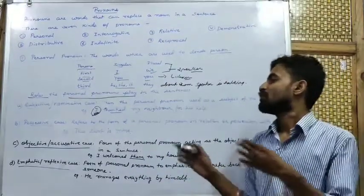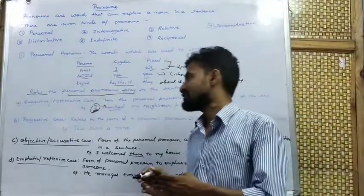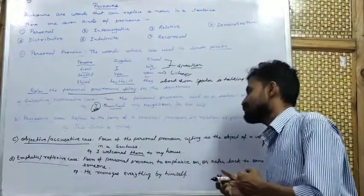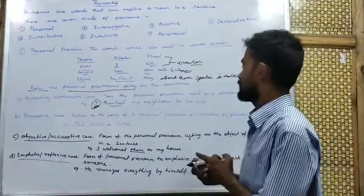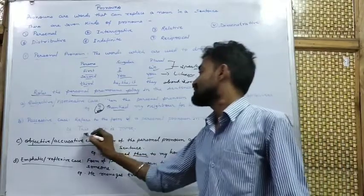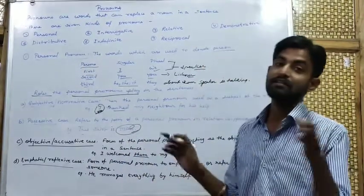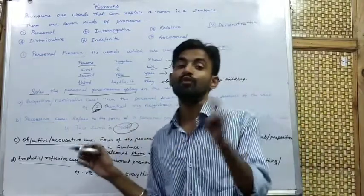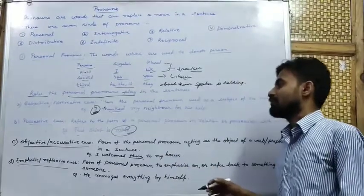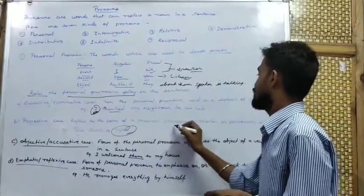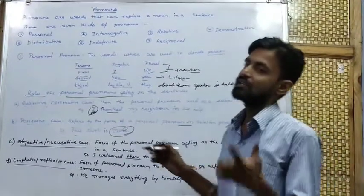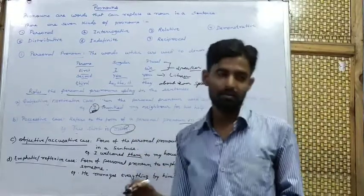Possessive case refers to the form of a personal pronoun in relation to the possession of a noun. For example: 'This shirt is mine.' Here 'mine' is showing possession — it is a personal pronoun in relation to the noun, which is the shirt.